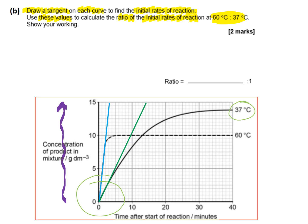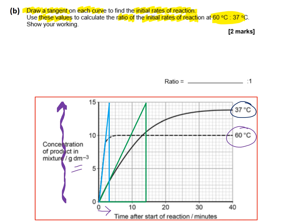Once we've drawn the tangents, we can work out the concentration of product produced per unit time and convert to per minute. Drawing lines down and across to time point zero: for 60°C, after three minutes, 15 grams per decimetre cubed of product has been produced. For 37°C, the tangent shows that 14 minutes produces the same concentration — 15 grams per decimetre cubed — which is obviously much longer than three minutes.